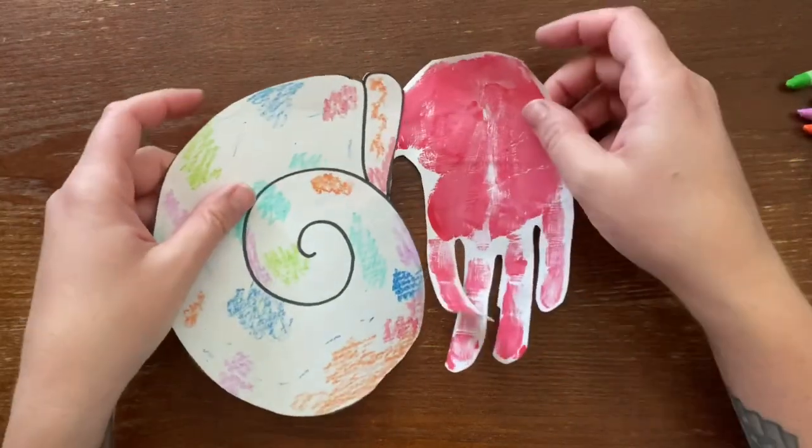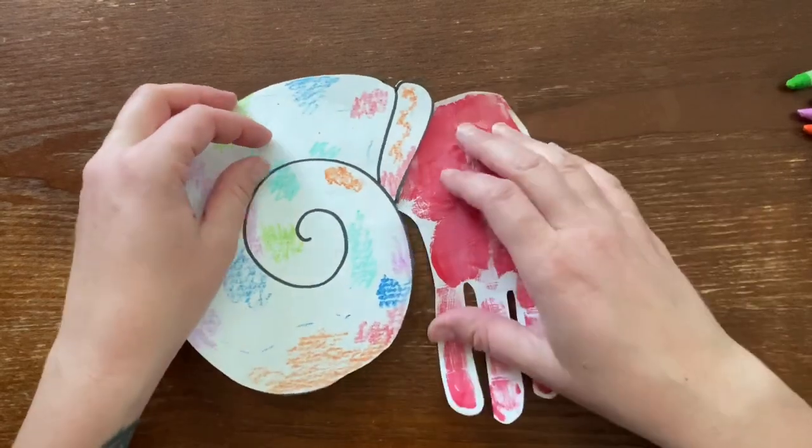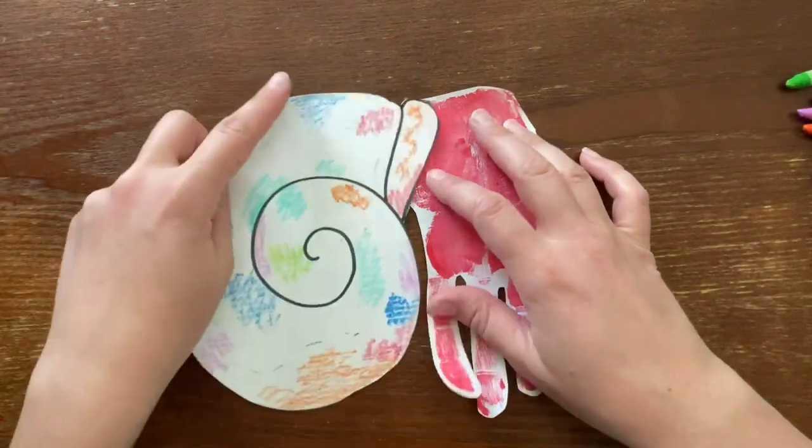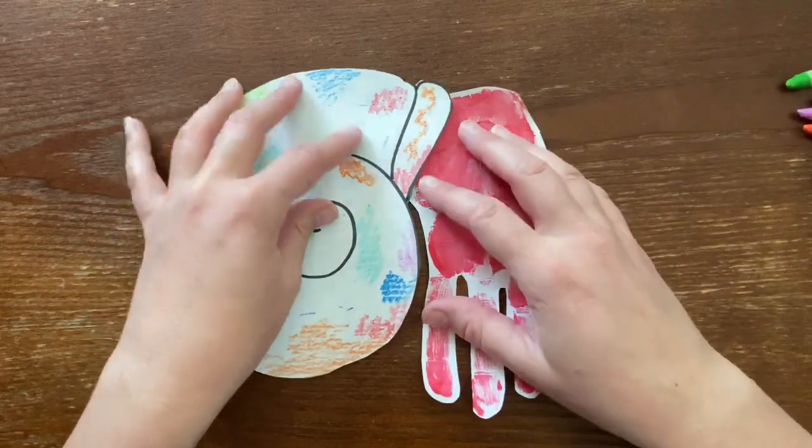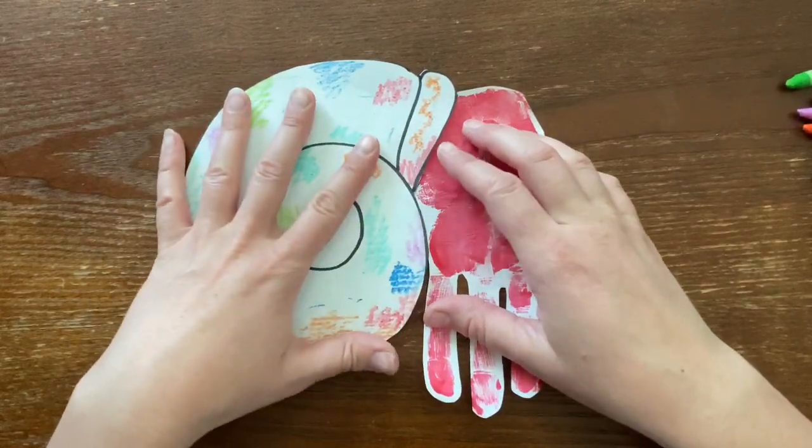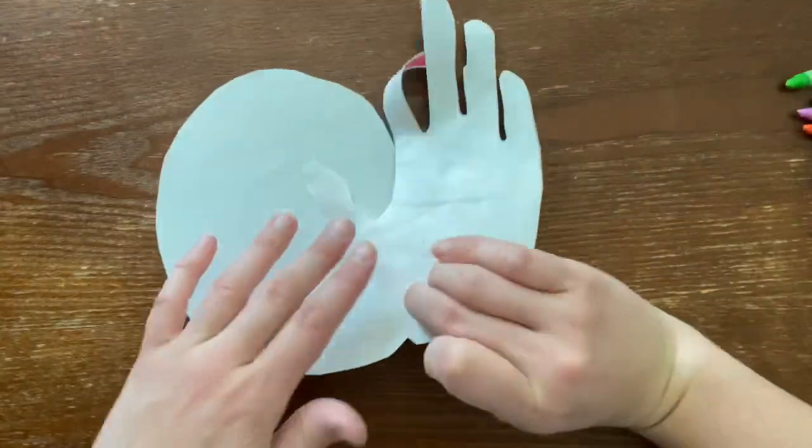So the thumb part will go inside the seashell. I think I'll have it right about here, so you adjust it to where you want it and you're going to flip it and tape it.